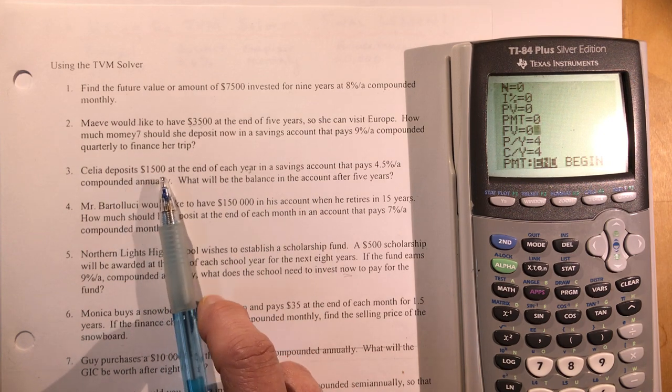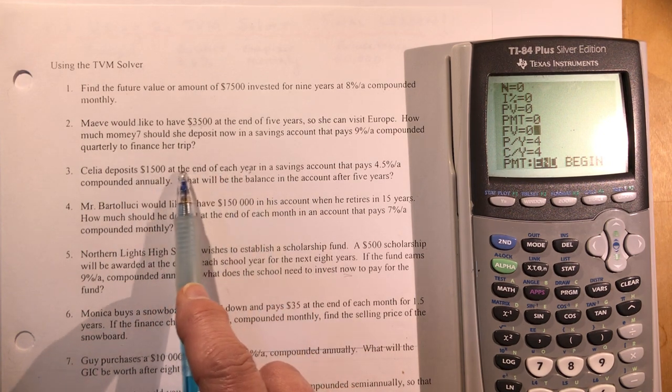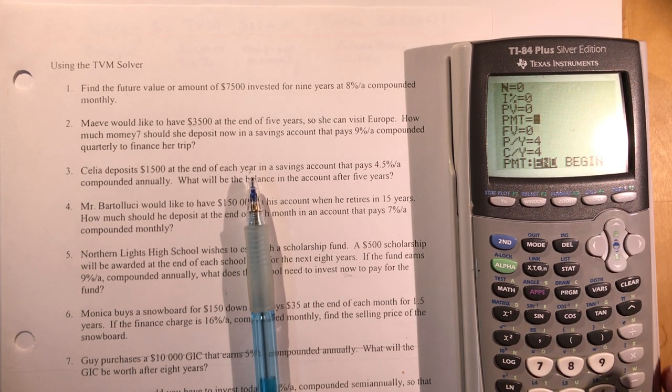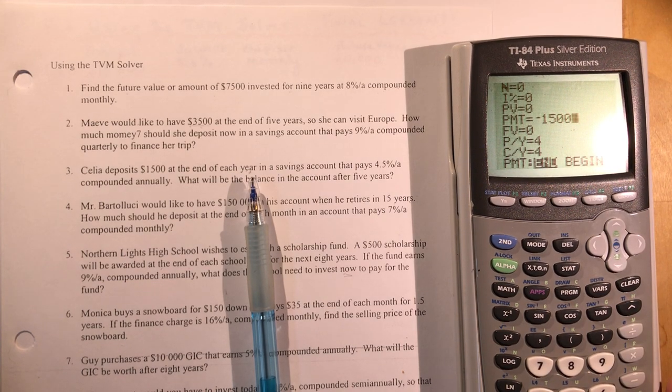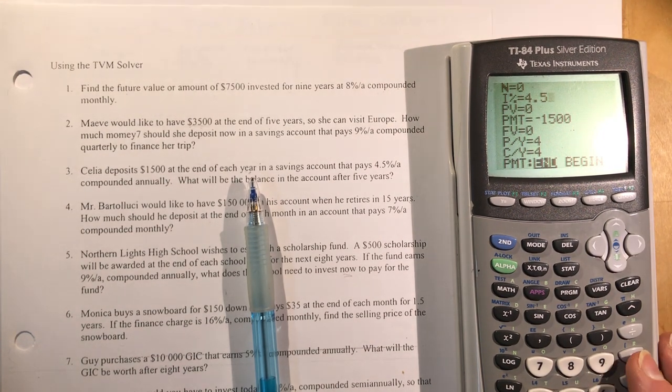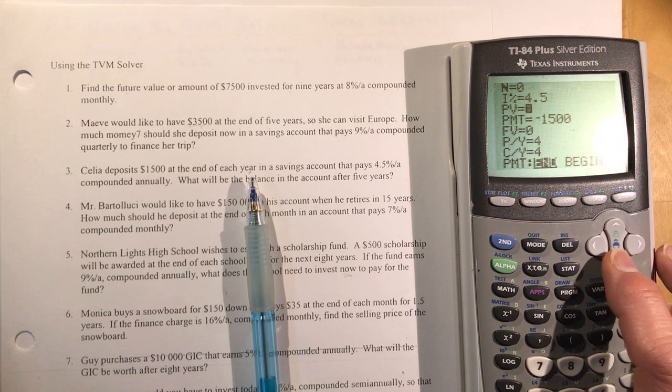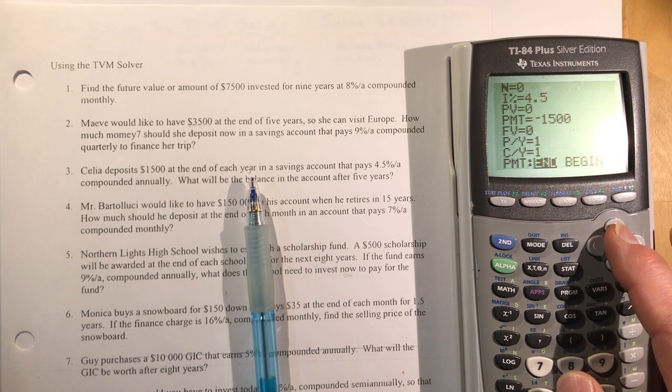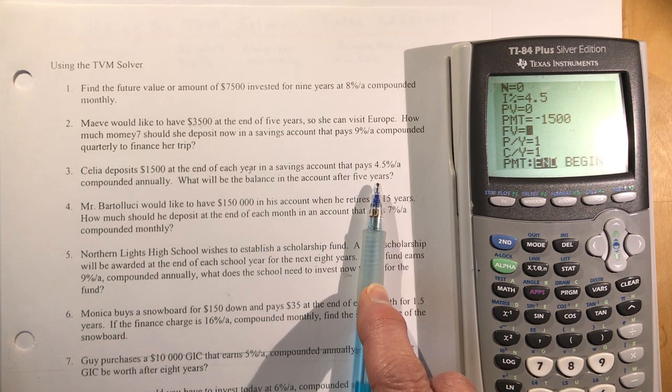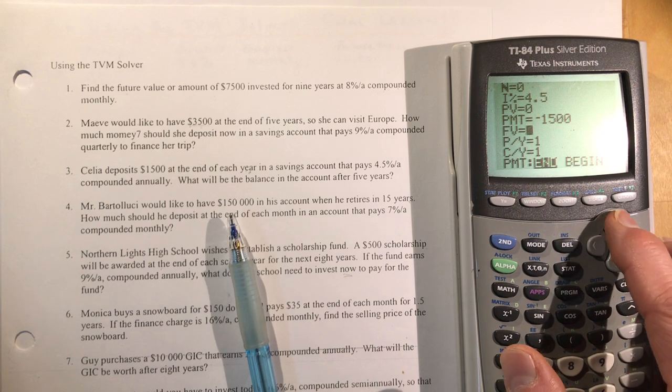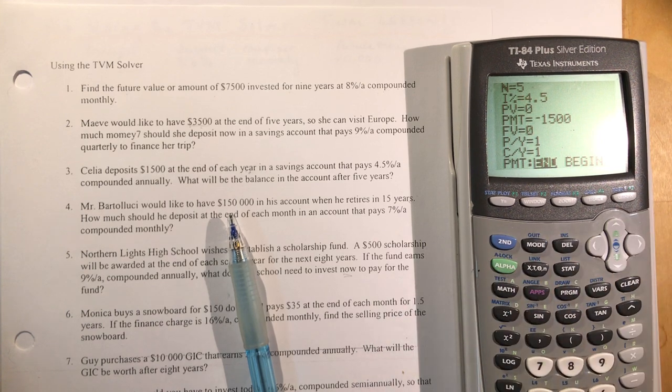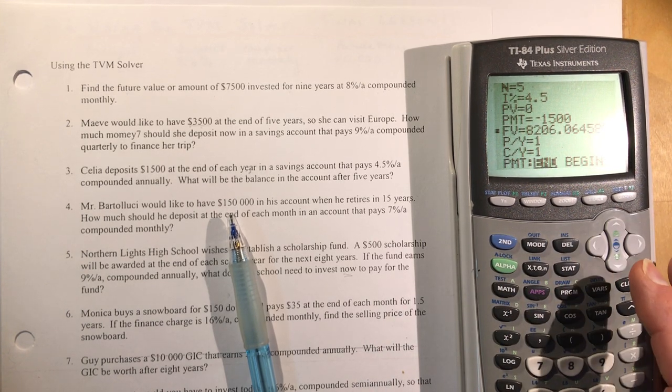Celia deposits $1,500 at the end of each year. That means it's an annuity. Her payments are $1,500 at the end of each year into a savings account that pays 4.5% interest. I put in 4.5 compounded annually, which means I need ones here. What will be the balance after five years? Five years annually means my n is 5, and I want to know the future value. Alpha, enter. $8,206.